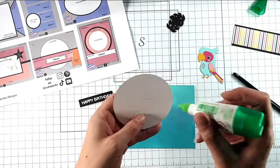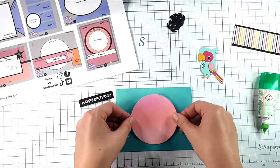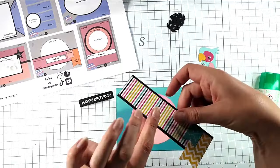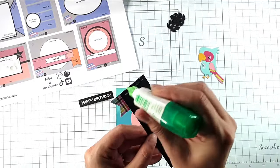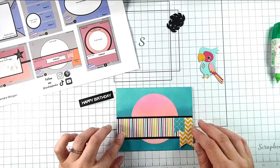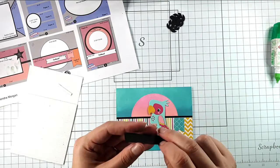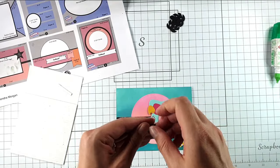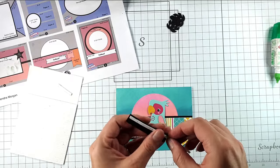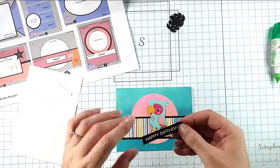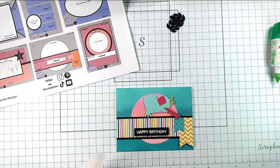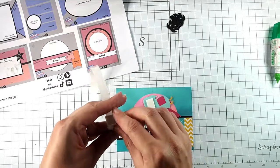So then I can just put it all together. So first thing to do is to glue on my circle. Then I can glue on this piece. So then I'm going to add my happy birthday on with some foam strips.